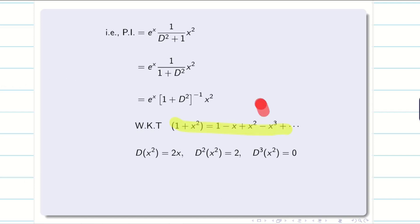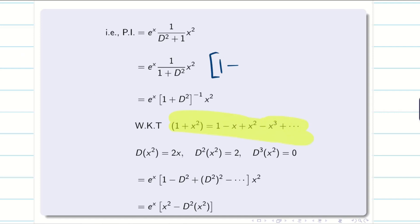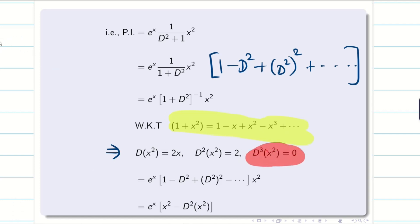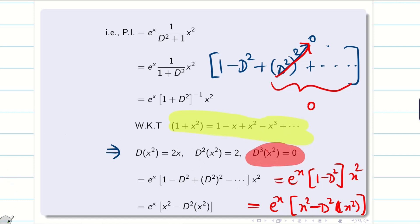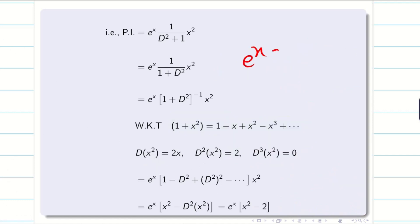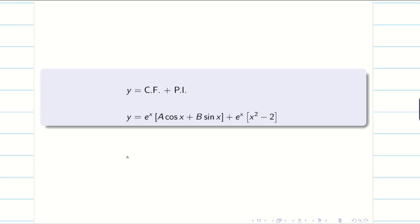Applying the formula and multiplying into x²: we expand (1 − d² + d⁴ − ...)x², and since d³(x²) = 0, only two terms survive: (1 − d²)x². Simplifying: x² − d²(x²) = x² − 2. Therefore the PI is e^x(x² − 2). The final solution is y = CF + PI, that is y = e^x(A·cos x + B·sin x) + e^x(x² − 2).